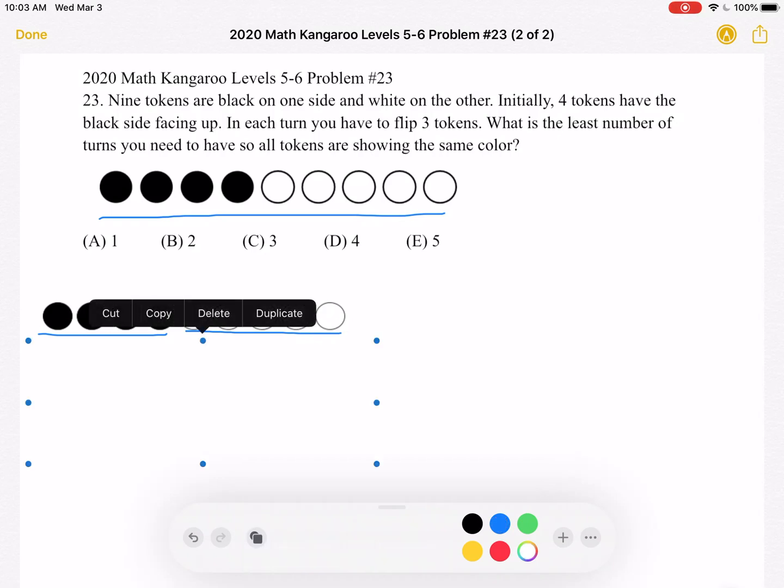And again, in each turn you have to flip three tokens. And we want all of them to show the same color. So we have more tokens with the white side facing up than tokens with the black side facing up.